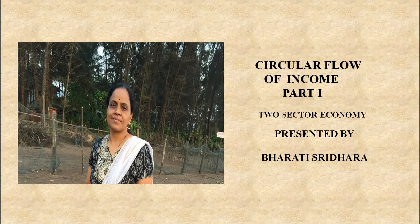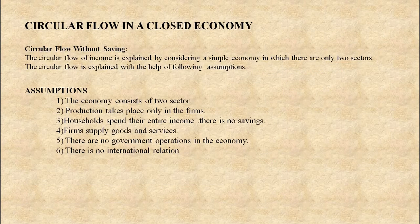Basically, what is circular flow? The circular flow of income is explained by considering a simple economy in which there are only two sectors: households and firms. Households are the owners of the factors of production. There are four factors of production: land, labor, capital and enterprise. They supply the services of these factors to those who make use of these services to produce goods and services.